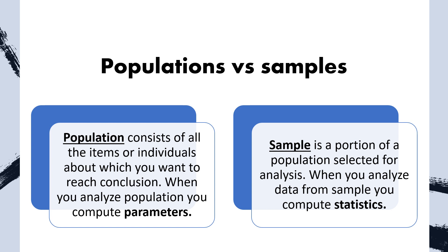Before looking deeper into the topic, we need to understand the difference between population and sample. A population consists of all the items or individuals about which you want to reach a conclusion — when you analyze a population, you compute parameters. A sample is a portion of a population selected for analysis — when you analyze data from a sample, you compute statistics.